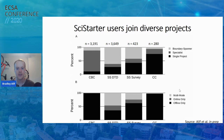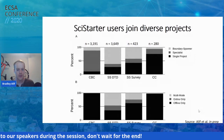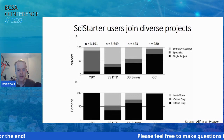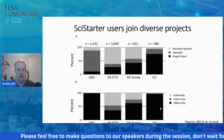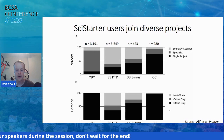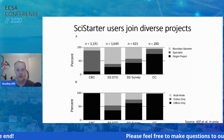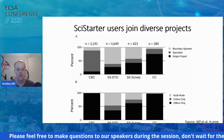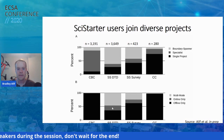We see something similar when breaking up projects by modality of participation — online versus offline. An offline project has a field component where you go outside to collect or analyze data; an online project can be done entirely online. In our standalone projects — Christmas Bird Count and Candid Critters — offline participation is almost ubiquitous, which makes sense as both are offline projects. Whereas SciStarter volunteers showed much more diverse modal engagement, with it being more common to participate in both online and offline projects, or to participate only online.